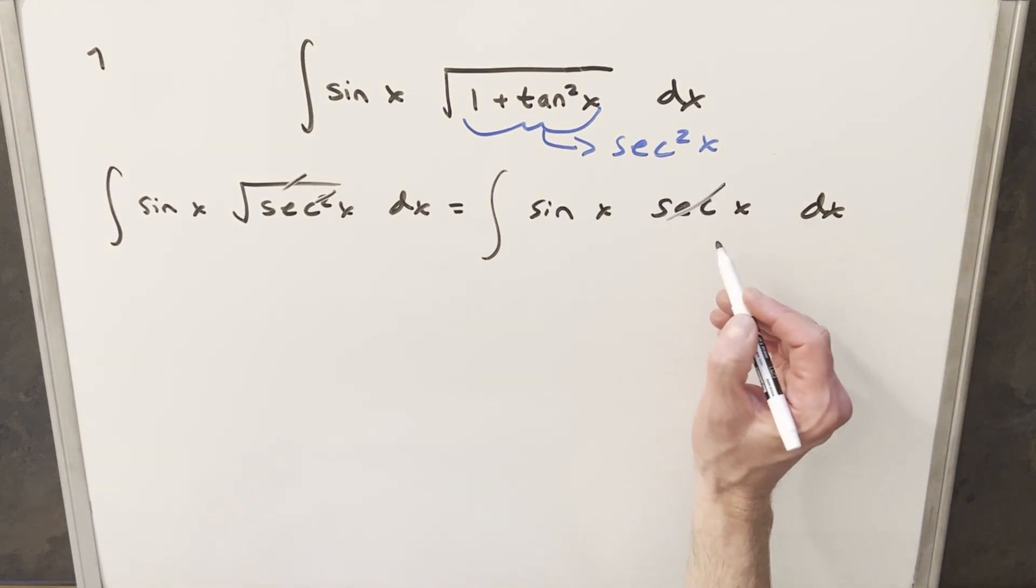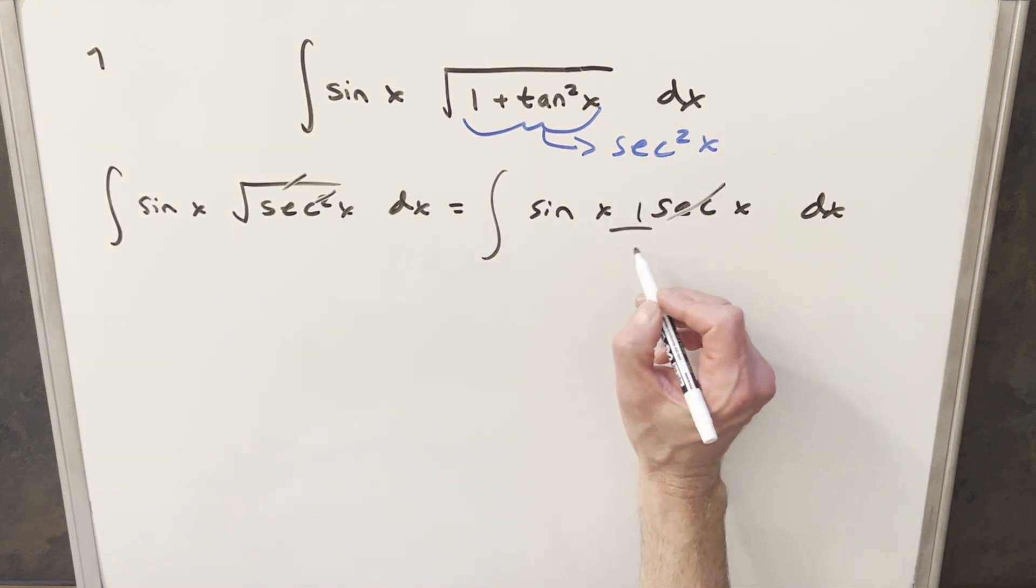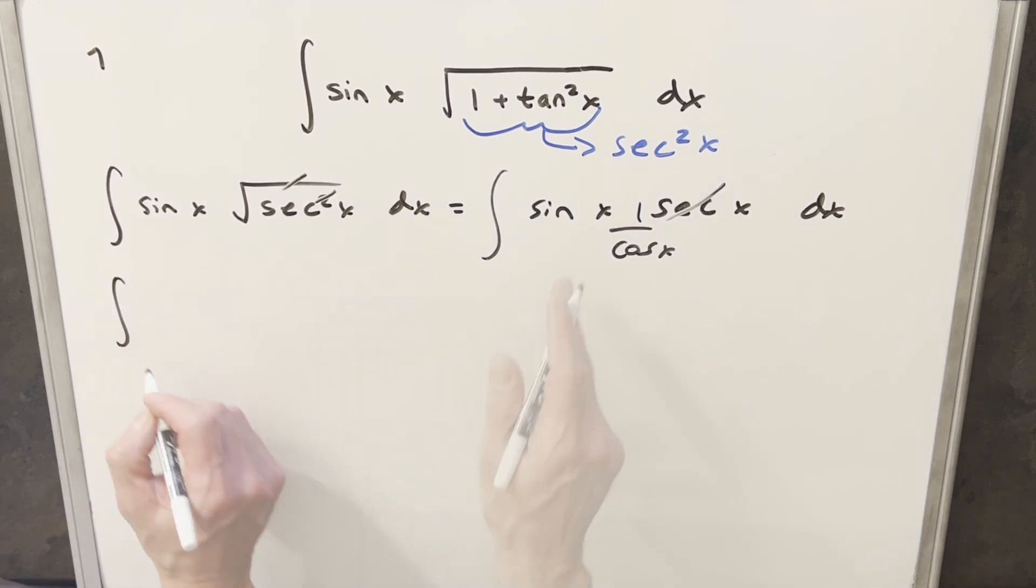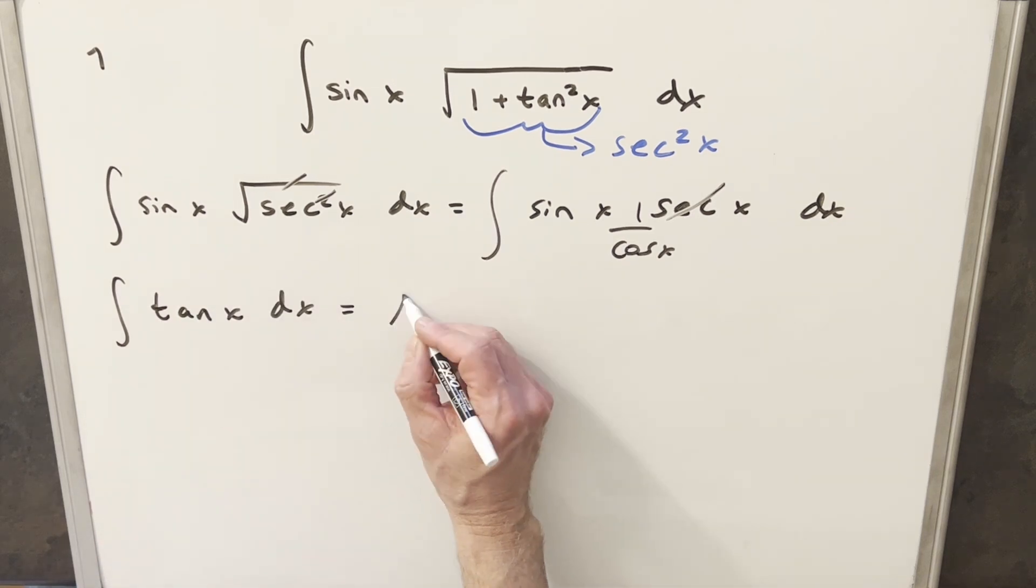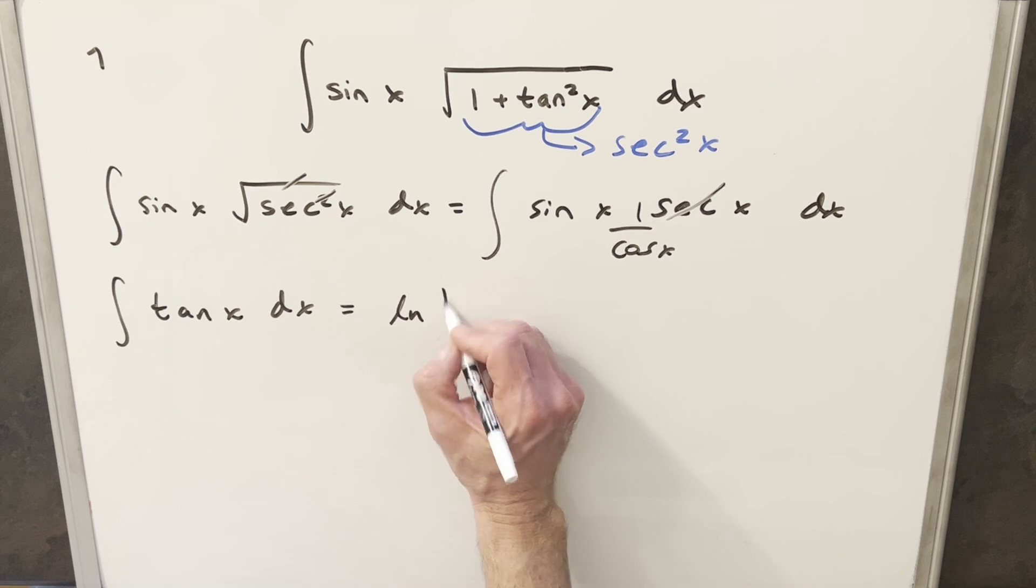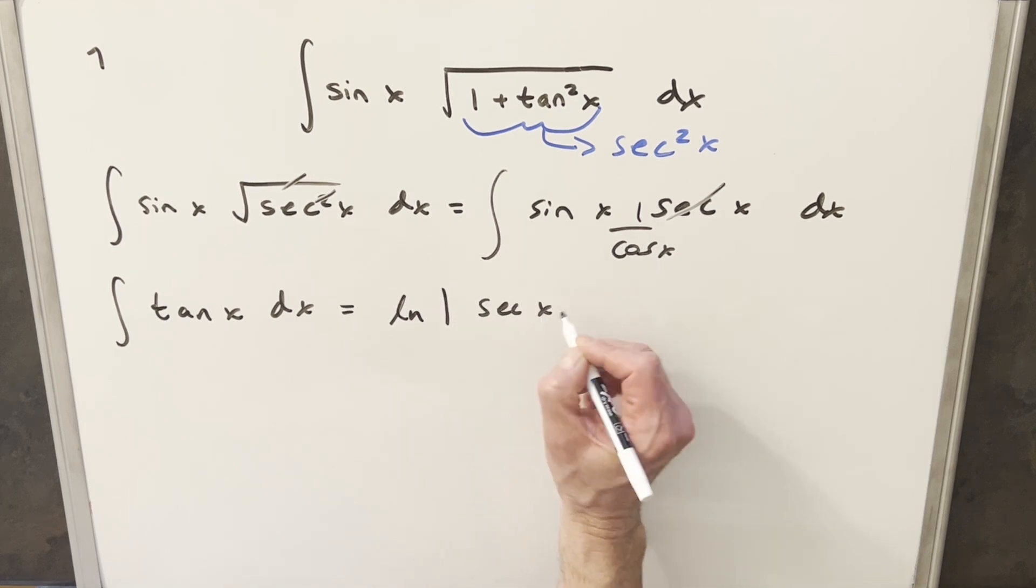If I write secant x as 1 over cosine x, then what we have here, sine x over cosine x, just gives me tan x. Now this is just a common integral. We can do this by the formula and write this as natural log absolute value of secant x plus c. And that's it.